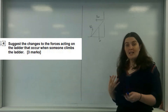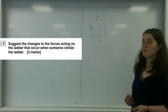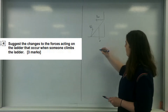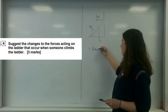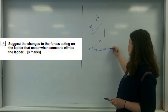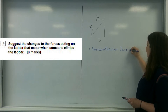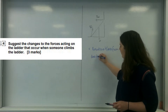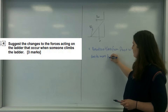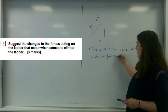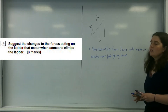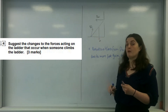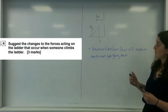As I add weight to the ladder, the resultant from the floor will have to increase to keep equilibrium. So the first point is: the resultant force from the floor will increase due to more force going down. Because the resultant from the floor is the force acting in the upwards direction, adding more weight means I need more upward force.